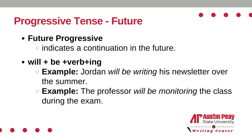The future progressive tense indicates a continuation in the future. It creates a sense of how the action is expected or anticipated to happen. It can be created by writing the words will plus be, plus the verb, plus the suffix -ing. For example: Jordan will be writing his newsletter over the summer, or the professor will be monitoring the class during the exam.